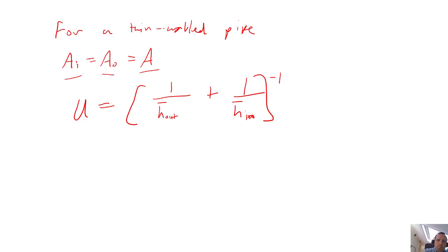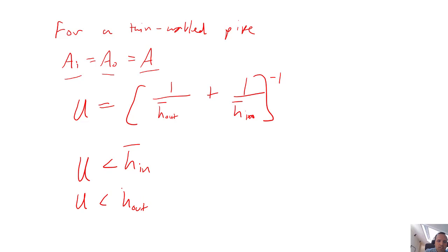It helps intuition to know that U is always smaller than H_in and always smaller than H_out. Because U incorporates all thermal resistances, and thermal resistances are additive in series, the largest U could possibly be is the smaller of H_in or H_out. By considering those additional thermal resistances, you are definitely making the overall rate of heat transfer smaller.